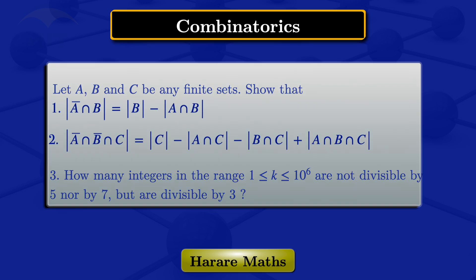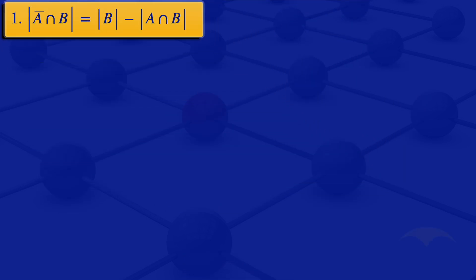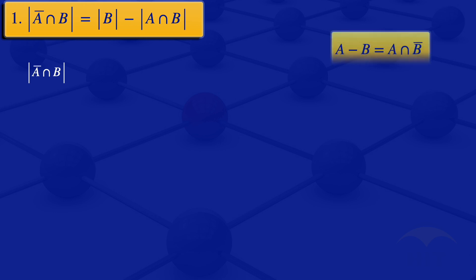I'll start by looking at the first one, showing that the cardinality of A complement intersection B equals the cardinality of B minus the cardinality of A intersection B. Looking at the left hand side, we have the cardinality of A complement intersection B. Recall we used set-builder notation to show that the set difference A minus B equals A intersection B complement. In this case we have B complement, so we can interchange: where we have A we put B, and where we have B we put A.